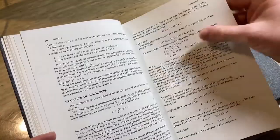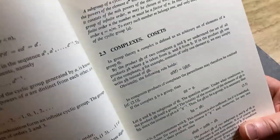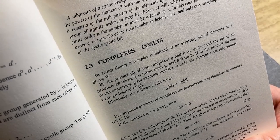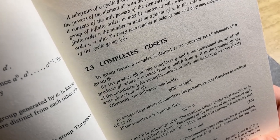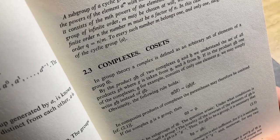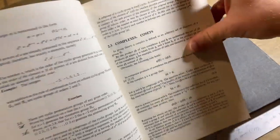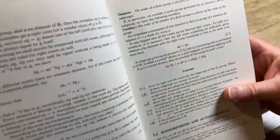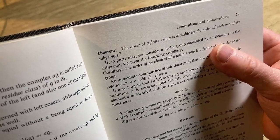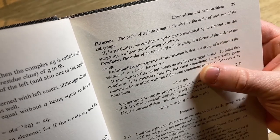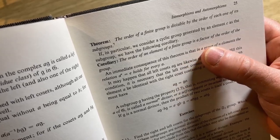Subgroups. Here we go. Complexes, cosets. What's this? In group theory, complexes defines an arbitrary set of elements of a group. Cool. Then it talks about the product of two complexes. And then here we're already at: the order of a finite group is divisible by the order of each one of its subgroups. Corollary: the order of an element of a finite group is a factor of the order of the group.